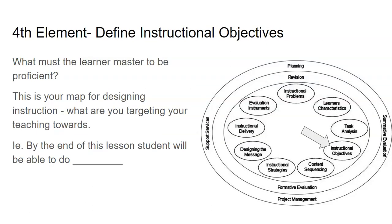Then we have instructional objectives — what must a learner do to be proficient? What's going to happen by the end of this lesson, training, or module? What can the student be able to do, and what should they know? In a classroom, you might see this as the 'I can' or 'we will' statements — 'by the end of this lesson, I will be able to do this.' That's the idea of instructional objectives.